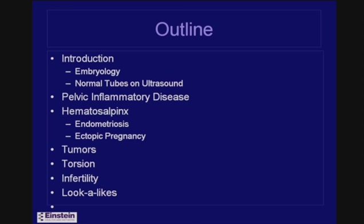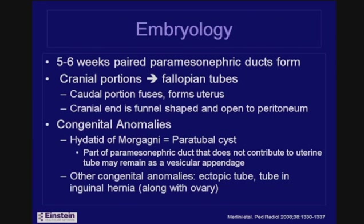This is the outline of the talk. First, we'll discuss the embryology and the appearance of normal fallopian tubes, and then a significant amount of discussion of fallopian tubes in pelvic inflammatory disease, followed by various causes of hematosalpinx, tumors, torsion, issues related to infertility, and then at the end, some look-alikes — other tubular structures in the pelvis.